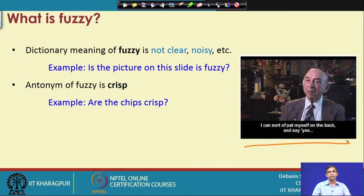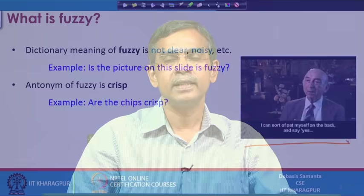We can understand the meaning of fuzzy better if we see its antonym. The antonym of fuzzy is crisp. If we say there are two regions and the boundary between them is not clear, then we can say the two regions are separated fuzzily. On the other hand, if there is a strong boundary by which we can easily distinguish two regions clearly, then we can say that the boundary is crisp. This way we can understand fuzzy versus crisp.